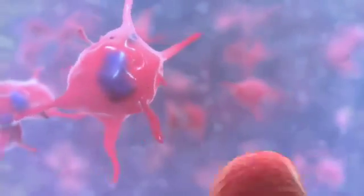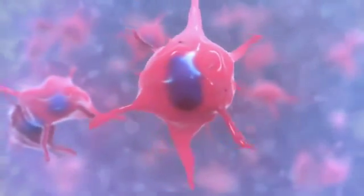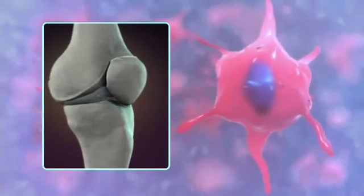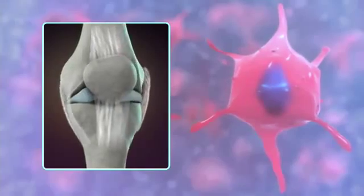Mesenchymal stem cells, found primarily in the umbilical cord tissue itself, have the ability to help form bone or connective tissues like cartilage and ligaments.